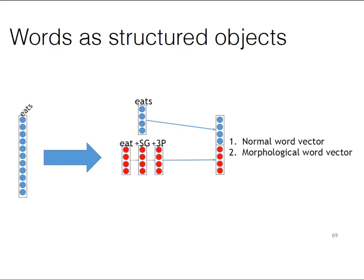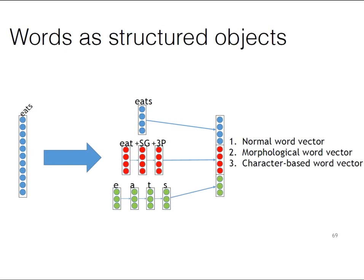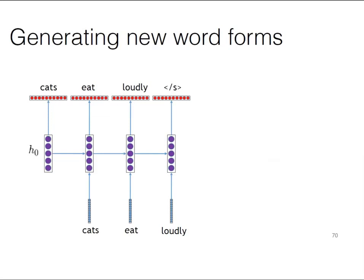We can concatenate morpheme representations together to form part of our word vector. And finally, we might also want to handle spelling variants — maybe someone spells 'eat' with seventeen E's. We can think of a word as a composition of a sequence of characters, giving yet another vector. One way to construct a representation that shares information across related verb forms is by concatenating these three representations: the idiosyncratic word lookup, the morphological decomposition, and the character-level composition.